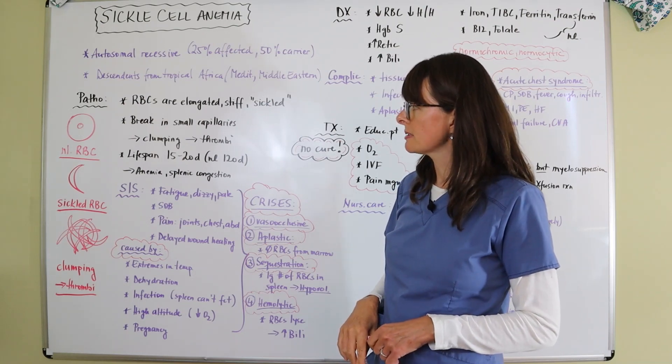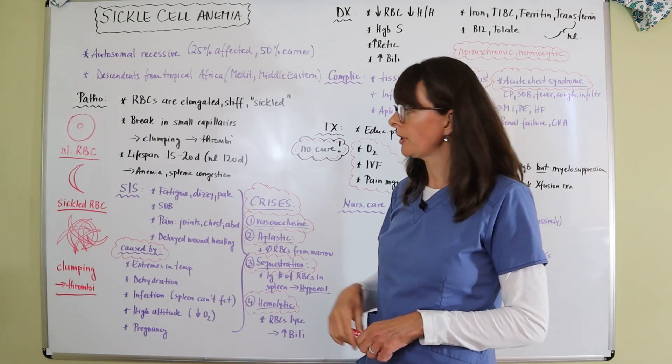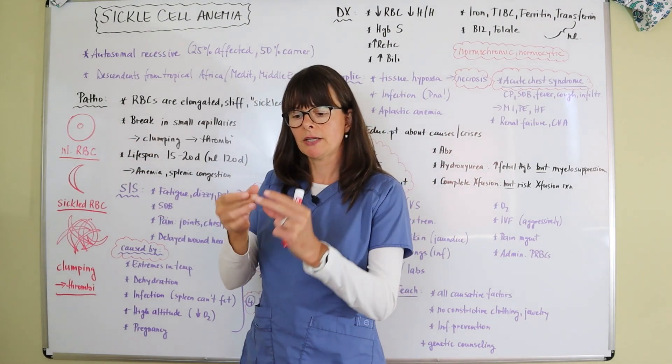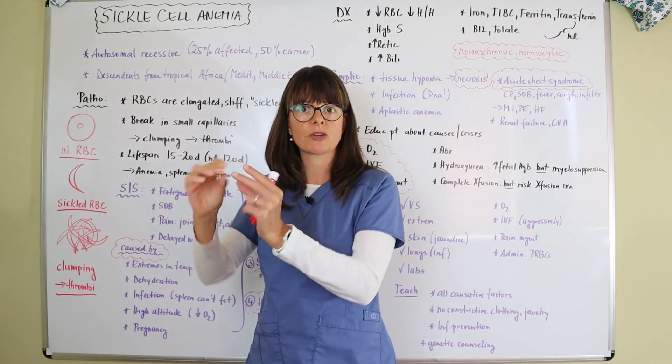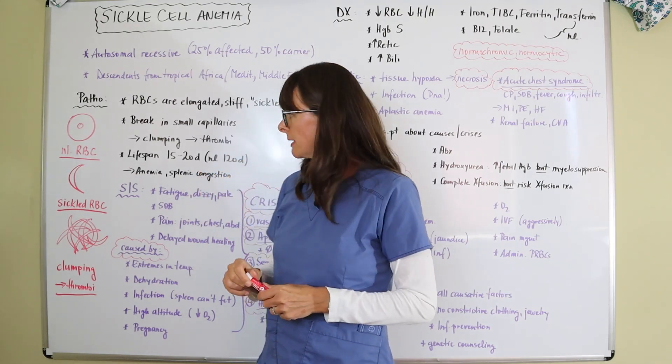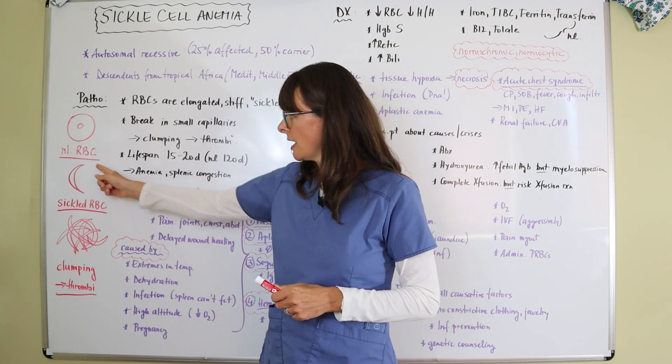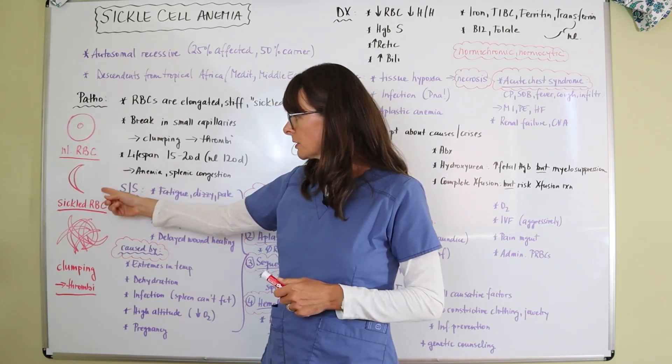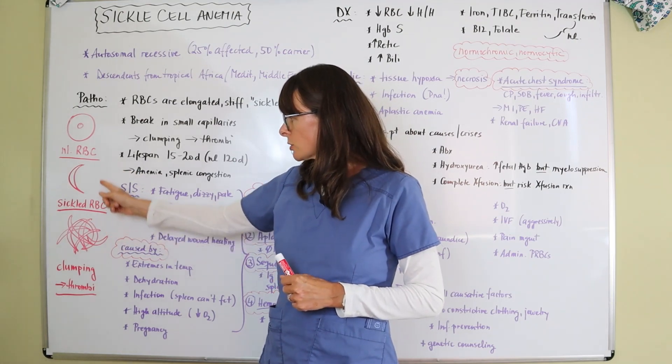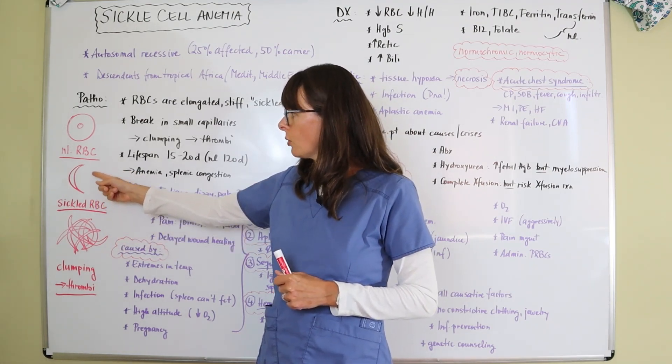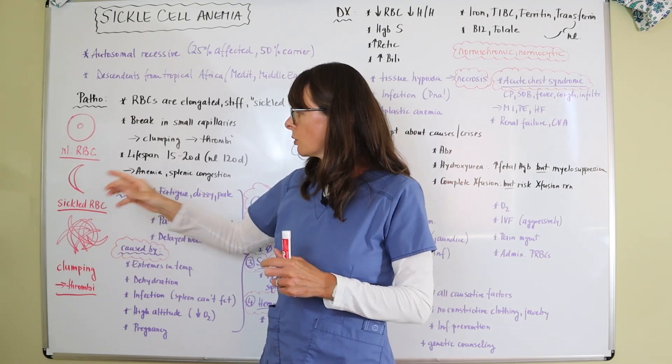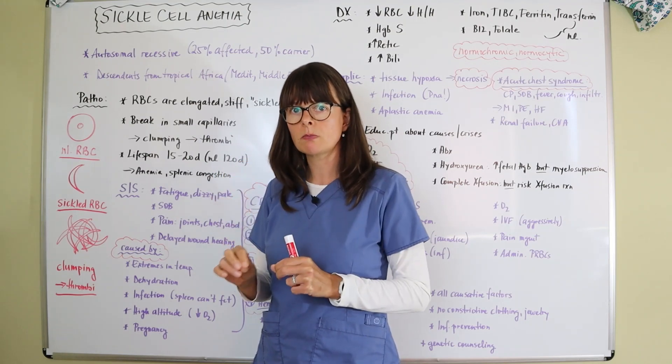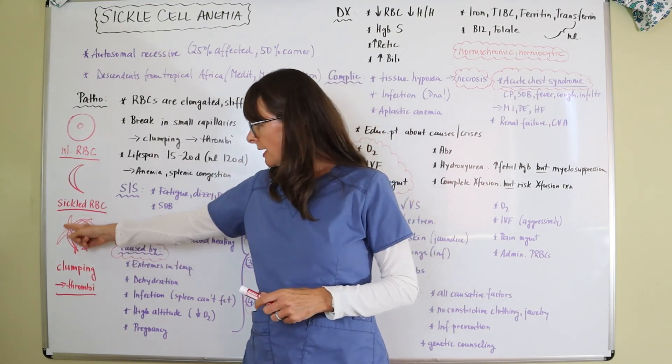So what happens in sickle cell disease? Normally a red blood cell is round in shape and very pliable. It can change shape as it goes through different small blood vessels. But sickled red blood cells have that almost half-moon shape that gives it the term sickle cell. These blood cells are not only a different shape, but they're also stiffer and less pliable, so they can't really get easily through these small capillaries.